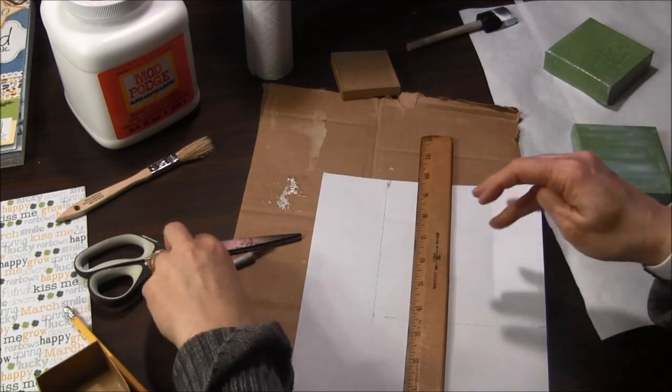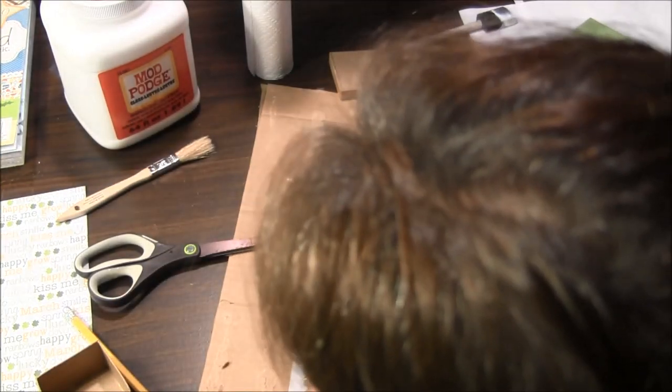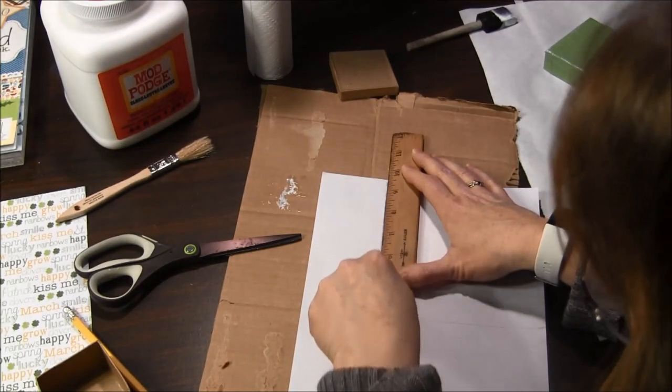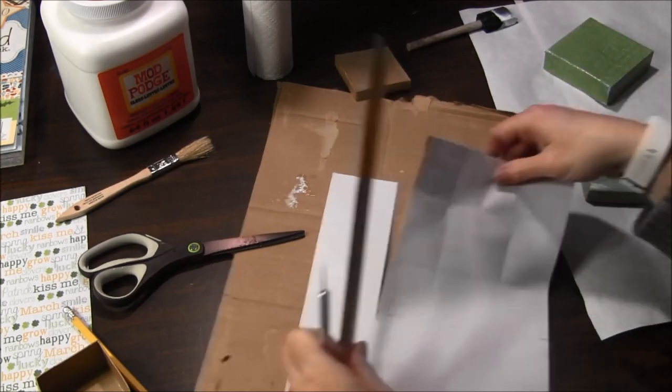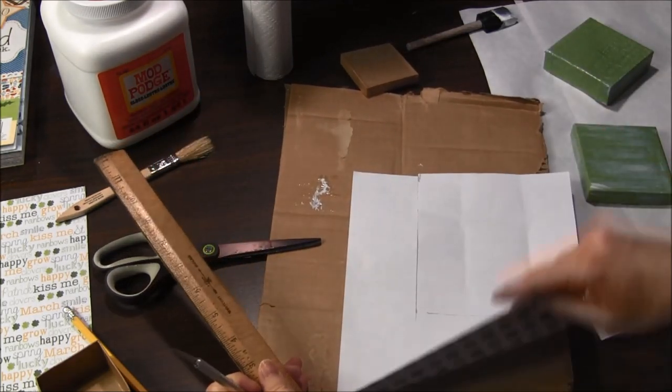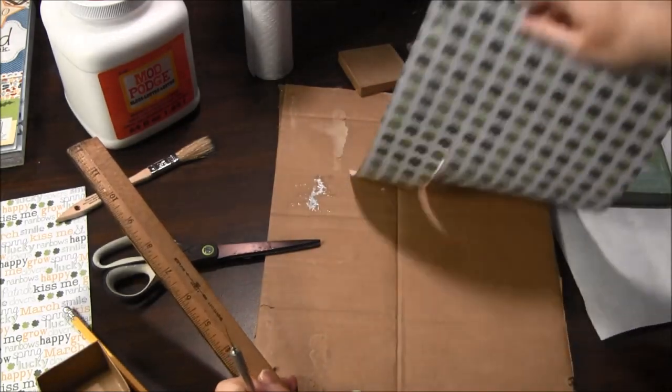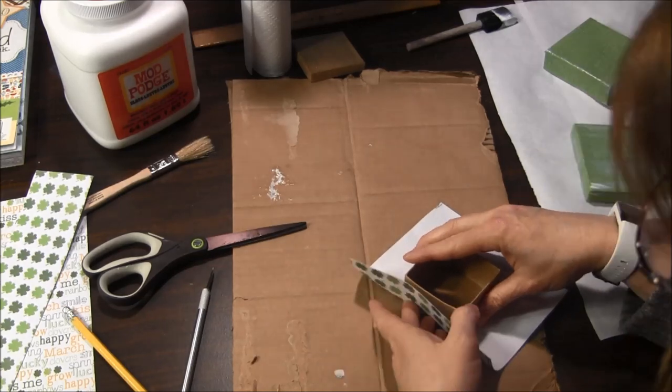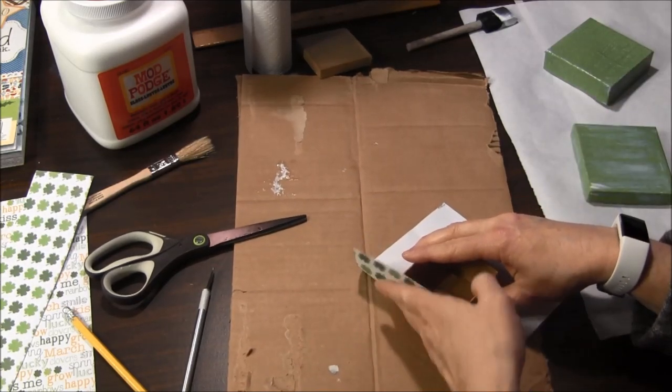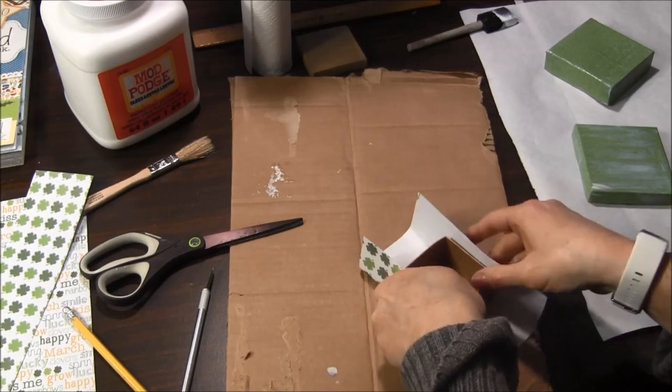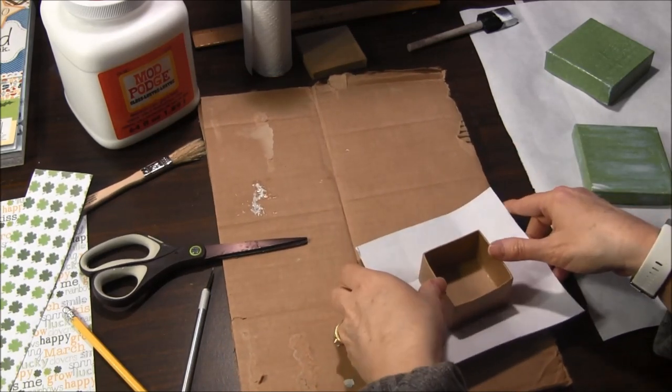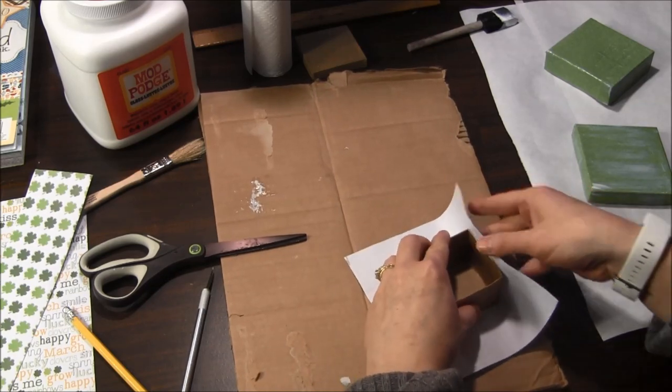Once I have my square marked then I can cut out the piece with the exacto knife. And I cut on my cardboard to be sure that I'm not going to mess up my table. So the next step then would be I'm going to just crease this up so I have an idea of where I want to place my box down on the paper once I put the glue on the bottom.